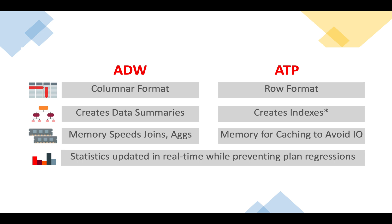In ATP, stats are automatically gathered when the volume of data changes significantly. This is really important: in ADW, stats gathering is done as soon as you do a bulk load of data, but in ATP, stats are gathered only when Oracle discovers there is a significant change in the volume of data — significant enough to make a real difference to the statistics.